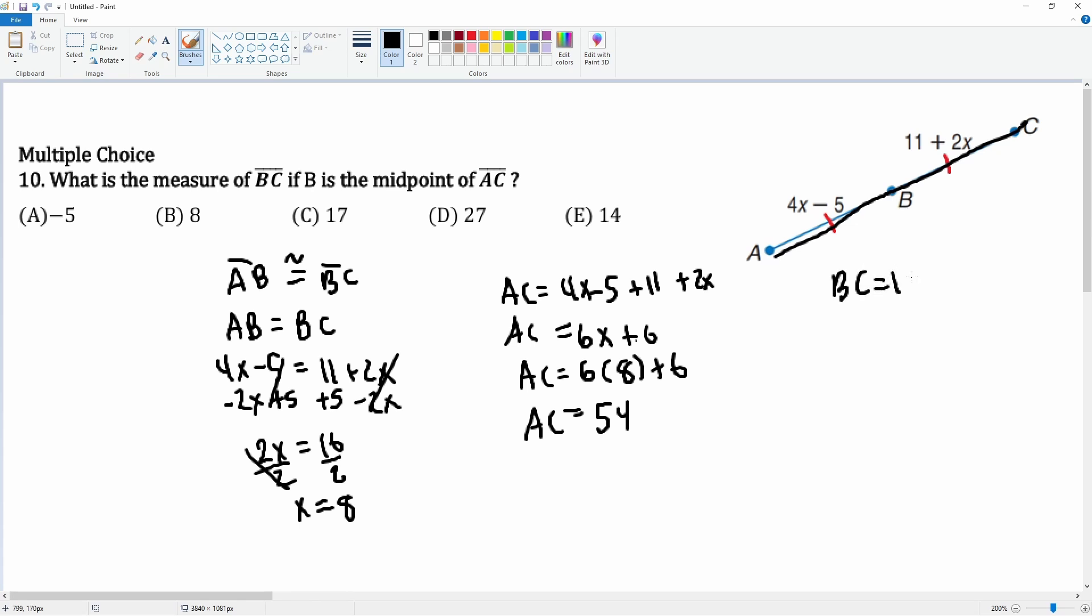BC is just equal to 11 plus 2x. 11 plus 2 times 8, 11 plus 16, so that's 27. That's what BC is. I should have read the question. That's what they're looking for, BC. Okay, there you go.